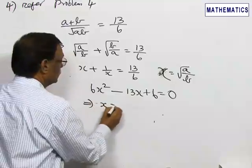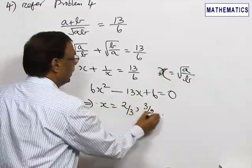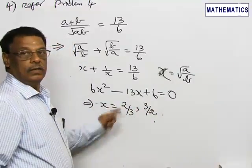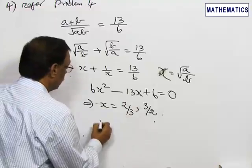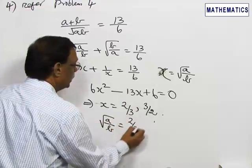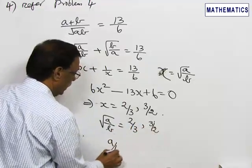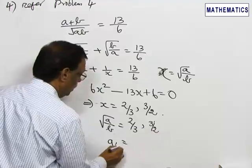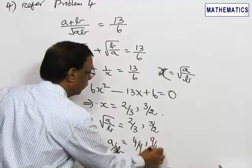This will give values for X as 2 by 3 or 3 by 2. These are two values if you solve the quadratic equation. X is what root of A by B. So root of A by B is equal to 2 by 3 or 3 by 2. Squaring this you will get A by B equal to 4 by 9 or 9 by 4.